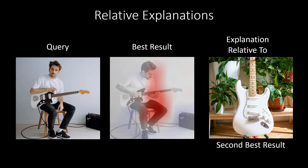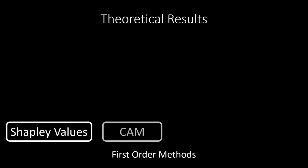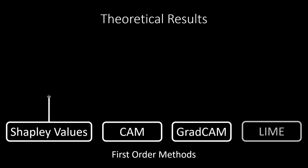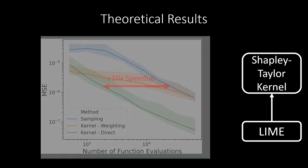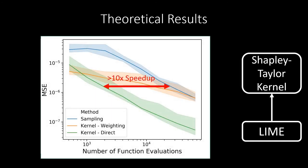Just as Shapley values could be lifted to a higher-order generalization, we found that many different model interpretability methods could be lifted to second-order interpretation methods. This investigation yielded new ways to approximate Shapley-Taylor indices using a kernel-weighted quadratic regression that requires 10 times fewer function evaluations than the prior state of the art.